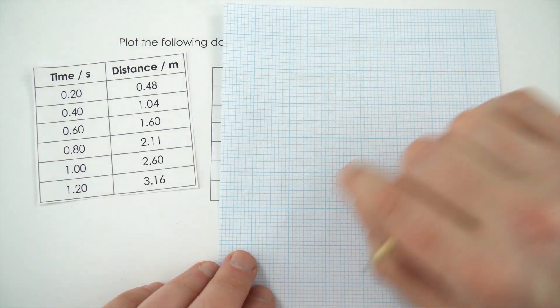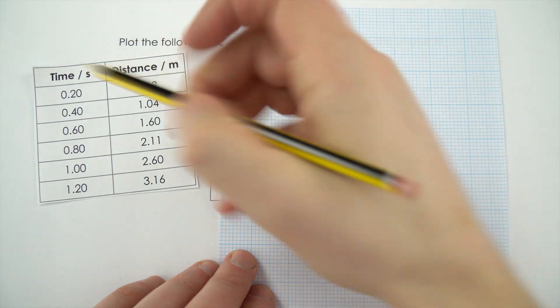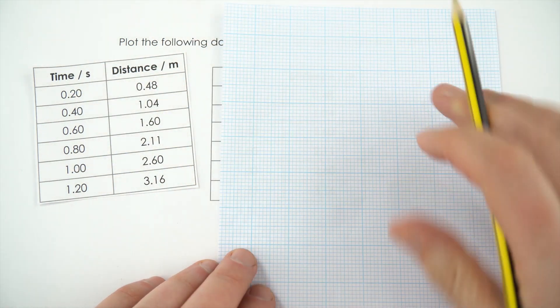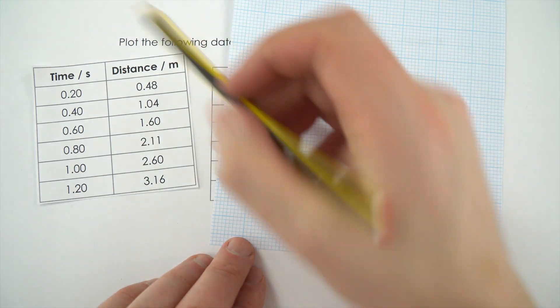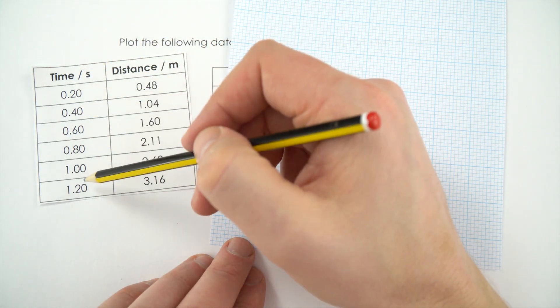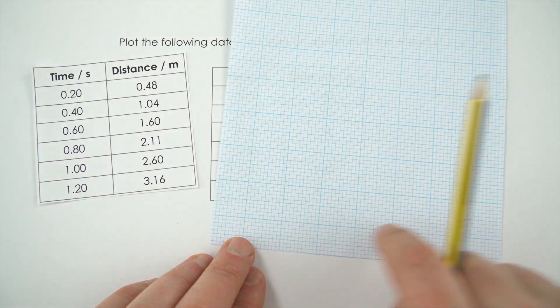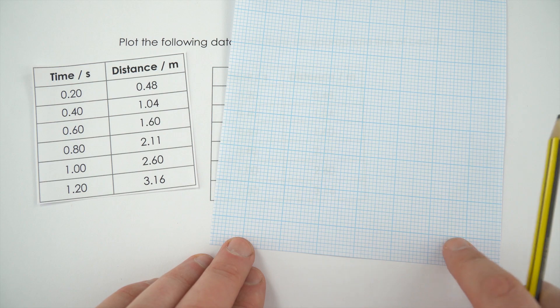The first thing I need to do is choose the correct scale for my axis. We can see that the time goes from 0.2 up to 1.2. This one here is our independent variable in this experiment, that's our dependent, and by convention we often put the independent variable on the x-axis, the one which goes horizontal.